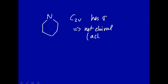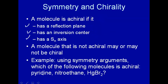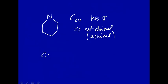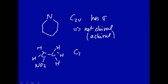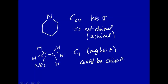Now let's look at nitroethane — that's the second example. Nitroethane looks like this. We said in one of the earlier lectures that this has symmetry C1. C1 has only the identity operation E. So nitroethane could be chiral, but not necessarily. In fact, all C1 molecules could be chiral — they don't have to be, but they could be.